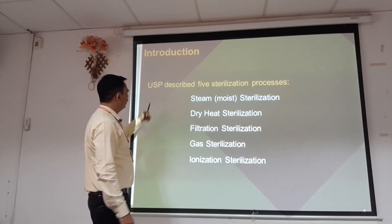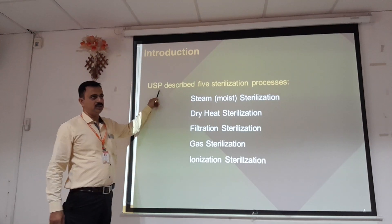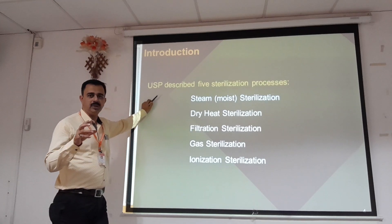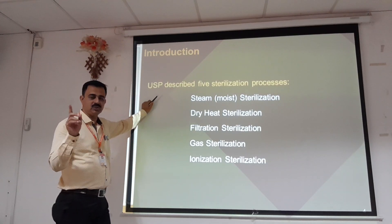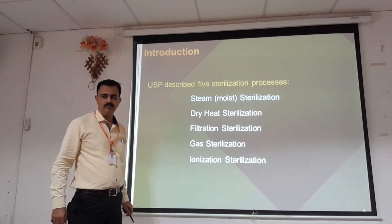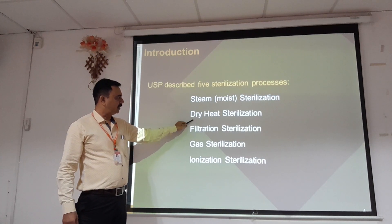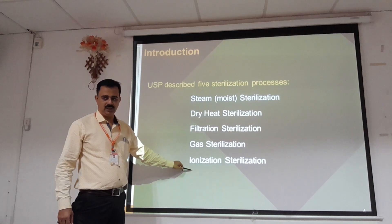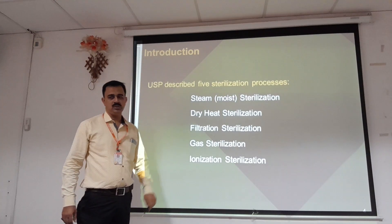In the United States Pharmacopoeia (USP), there is a pharmaceutical procedure called sterilization categorization. It includes: steam, moist heat sterilization, dry heat, filtration, gas, and ionizing sterilization. This is the particular USP classification.